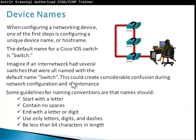Now, the first thing is the device name. When you configure a network device, one of the first steps is to configure a unique device name or hostname. The default name for a Cisco IOS switch is 'switch.' Imagine if a network had several switches all named 'switch' — this could create considerable confusion during network configuration and maintenance. You wouldn't know which switch you're configuring when moving between them. So we give names to identify them — switch one floor one, switch one floor two, switch one side room, whatever gives a good distinction.